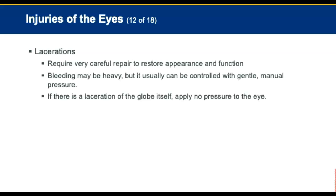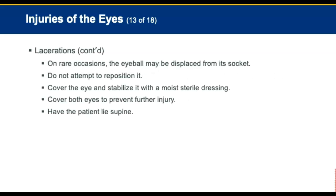Lacerations require very careful repair to restore appearance and function. If there is a laceration of the globe itself, apply no pressure to the eye. Gently apply a moist sterile dressing to prevent drying, and cover the injury with a protective metal shield, cup, or sterile dressing. Apply a soft dressing to both eyes. On rare occasions, the eyeball may be dislodged from the socket. Do not attempt to reposition it. Cover the eye and stabilize it with moist sterile dressing. Cover both eyes to prevent further injury from sympathetic movement. Have the patient lie supine to prevent loss of fluid from the eye.